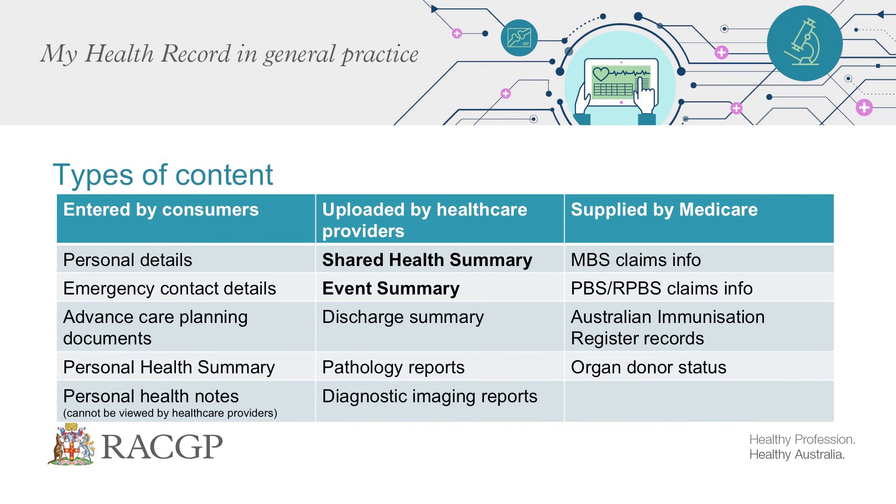The event summary is a relatively new concept - something you can choose to upload if there's been just a small event and you don't think you need to upload a whole shared health summary. It's probably more useful for seeing a patient who's not normally your patient and you want to upload that you saw them and treated their cellulitis with Augmentin or whatever, so the next practitioner will know if they look at the record. However, the ideal is still to send a letter to the treating GP. We don't want to use My Health Record as a communication tool because the usual GP will have no way of knowing that information has been put on My Health Record - there's no alert in Medical Director, Best Practice, or Z-Med to say there's something new in there.